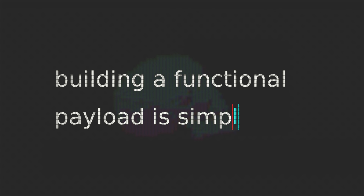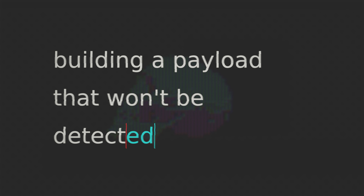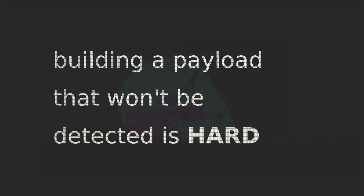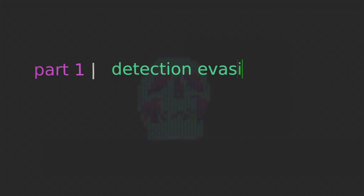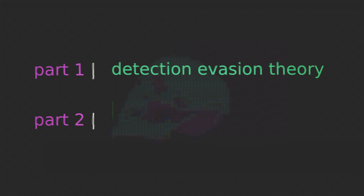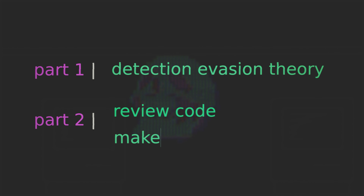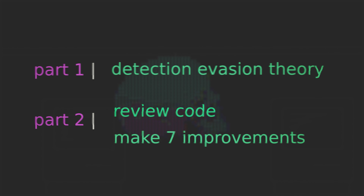Detection evasion is really in many ways the most important thing when it comes to creating malware. Sure, you need to know how to code and know the basics of making your payload execute, but beyond this foundation most of our time will be spent understanding elements of detection and how to evade it. That's because ultimately building a functional payload is pretty simple, but creating a payload that won't be detected can range from tricky to near impossible — and it's constantly getting harder.